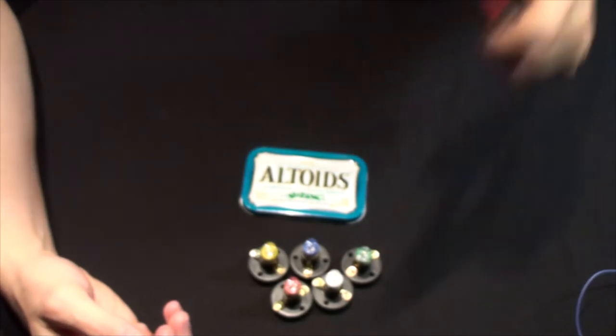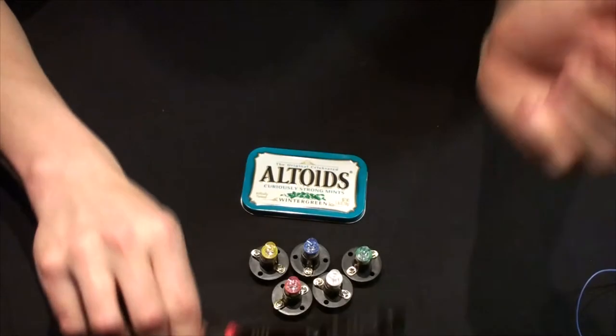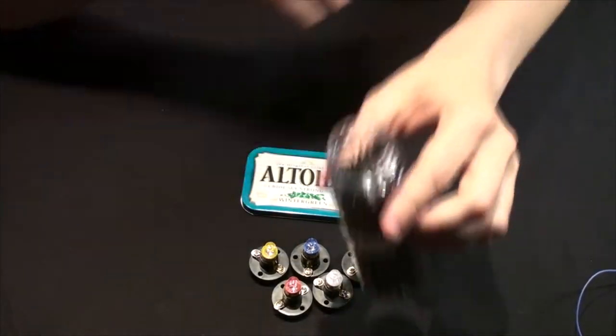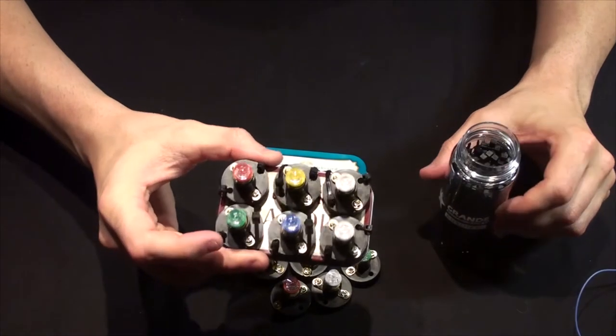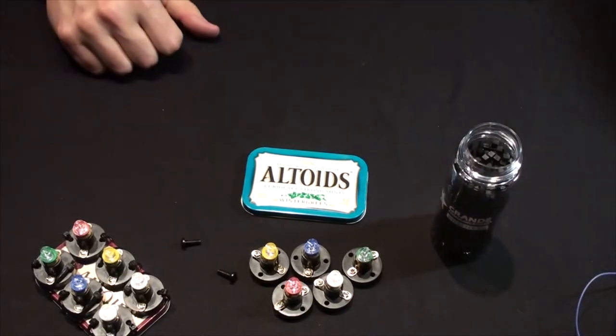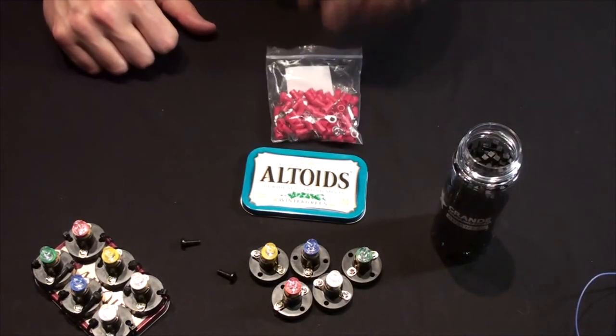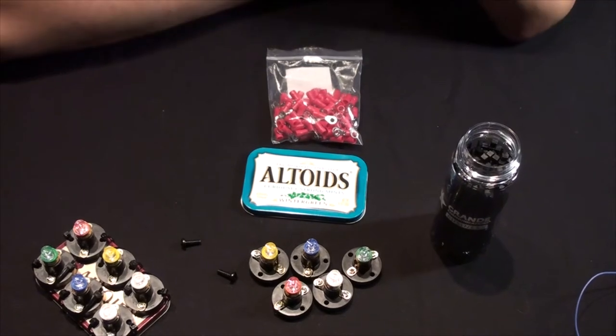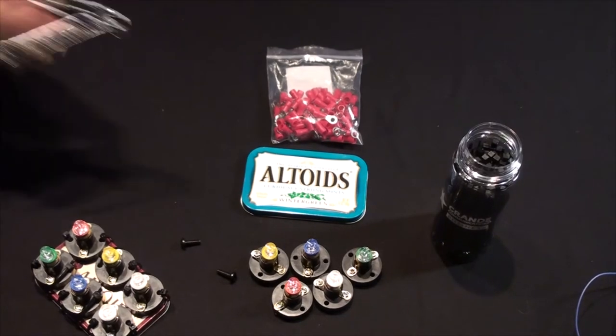You will also need a ring terminal crimper, and this has a wire stripper on it. I use zip strips to put these, to mount these guys, but you can use screws and nuts if you like.